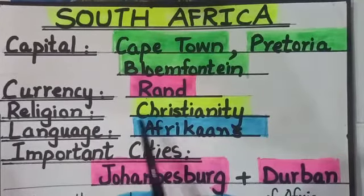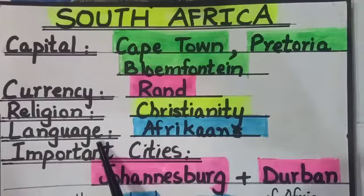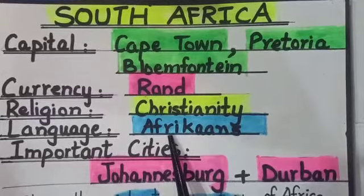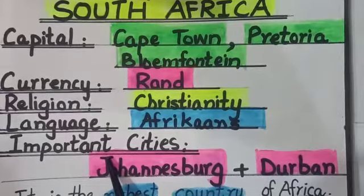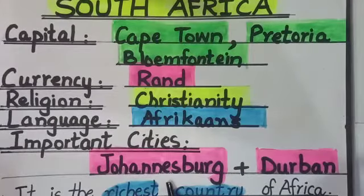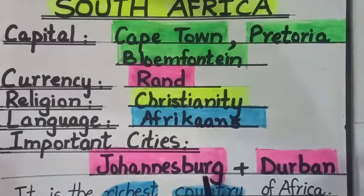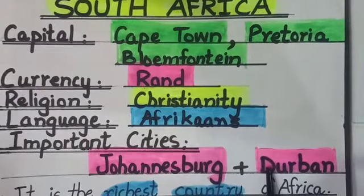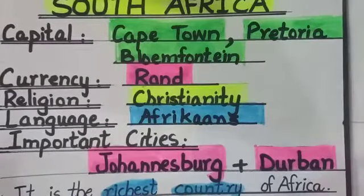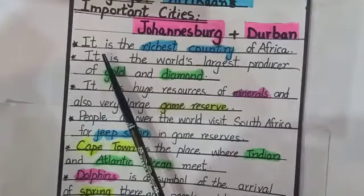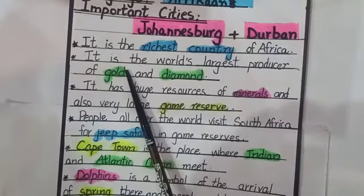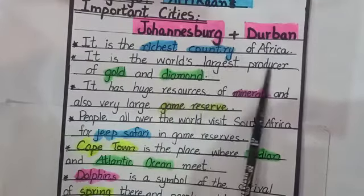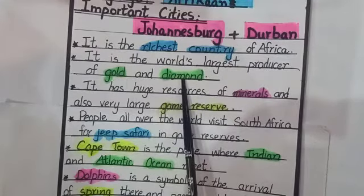The religion of South Africa is Christianity. The language of South Africa is Afrikaans. The important cities of South Africa are Johannesburg and Durban. These two are the important cities of South Africa. South Africa is the richest country of Africa.